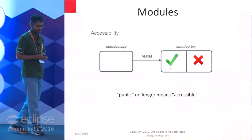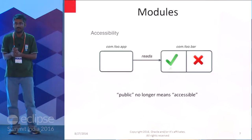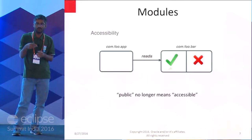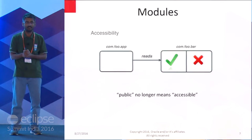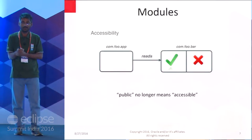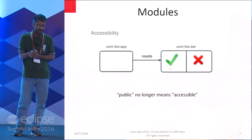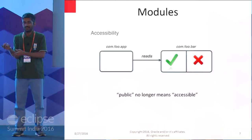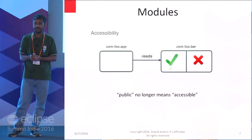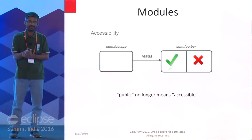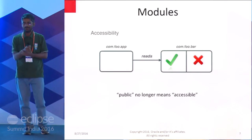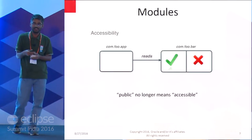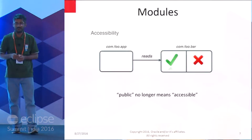All three conditions — public class, exported package, and required dependency — must be satisfied. This accessibility is now enforced very strictly, right from compile time through runtime and even at the VM level. Even regular Java reflection may not work unless you expose a package. This disallows use of internal packages like com.sun.internal. However, for JDK 9 there is a workaround called '--add-exports' to utilize internal packages temporarily.